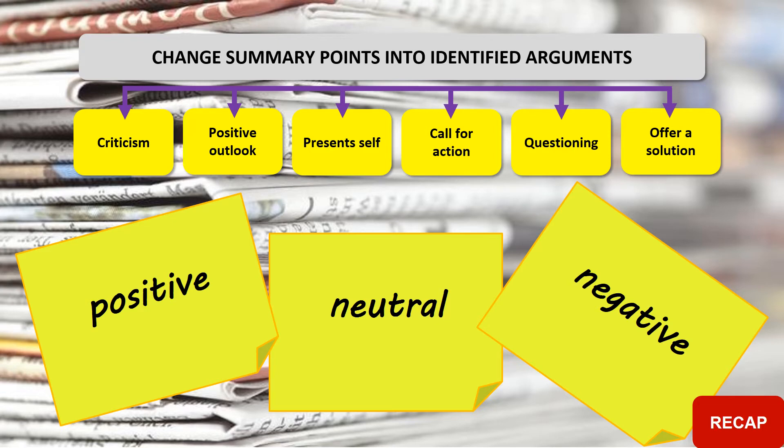Then of course we had to change our summary points into identified arguments using the six categories: criticism, positive outlook, present self, call for action, questioning, and offers a solution. Those summary points about the positive, negative, or neutral direct us towards some of those categories rather than others.